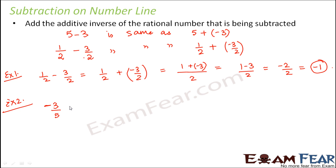Let's say minus 3 by 5 minus minus 1 by 2. Now we know that subtracting a number is same as adding its additive inverse. So basically this can be written as minus 3 by 5 plus the additive inverse of minus 1 by 2, which is plus 1 by 2. So minus 3 by 5 plus 1 by 2.